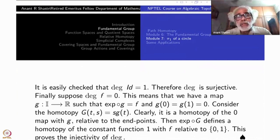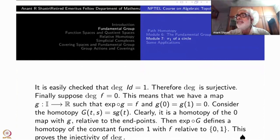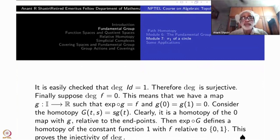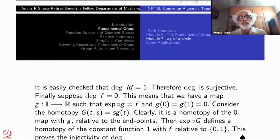Therefore our F must be the identity element of the group. We showed degree of F is zero implies the class F must be the identity element of the group. So this proves that degree, being already a homomorphism, is injective. The kernel of the homomorphism being zero means it is injective. So this proves that the degree map is an isomorphism and completes the computation of π₁(S¹). π₁(S¹) is an infinite cyclic group.